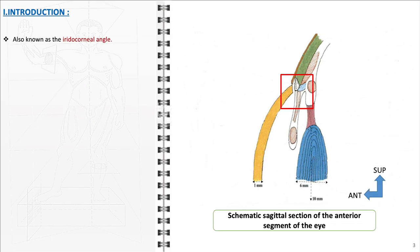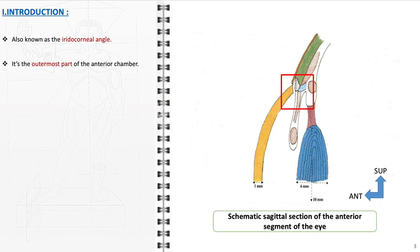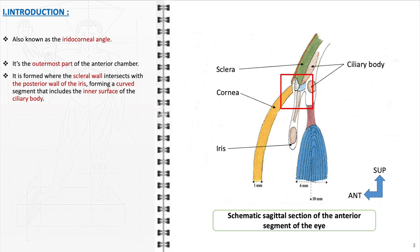The anterior chamber angle, also known as the iridocorneal angle, is the outermost part of the anterior chamber. It forms at the point where the scleral wall meets the posterior wall of the iris. This meeting point creates a curved segment that also includes the inner surface of the ciliary body, an important structure in the eye involved in the production of aqueous humor.